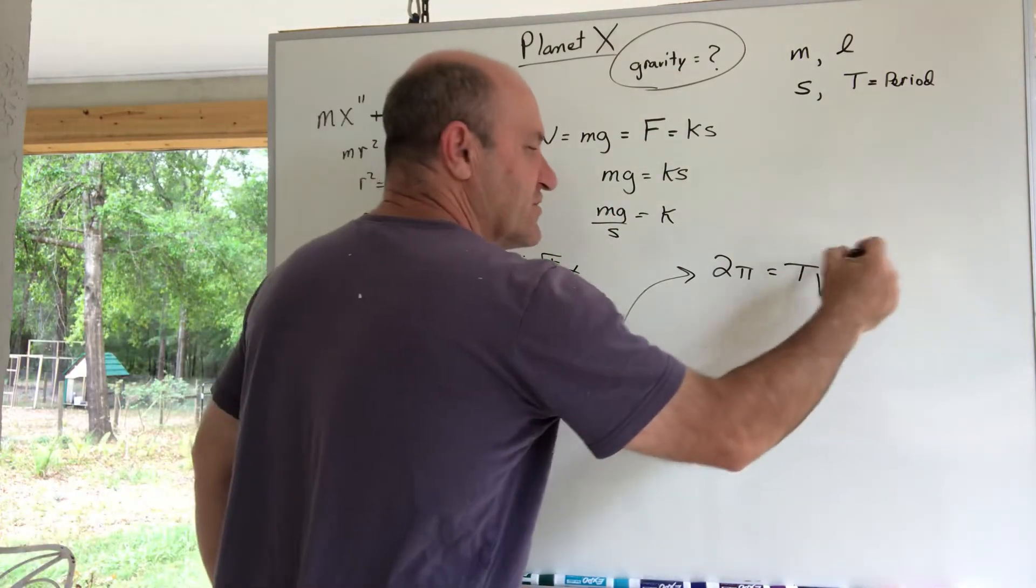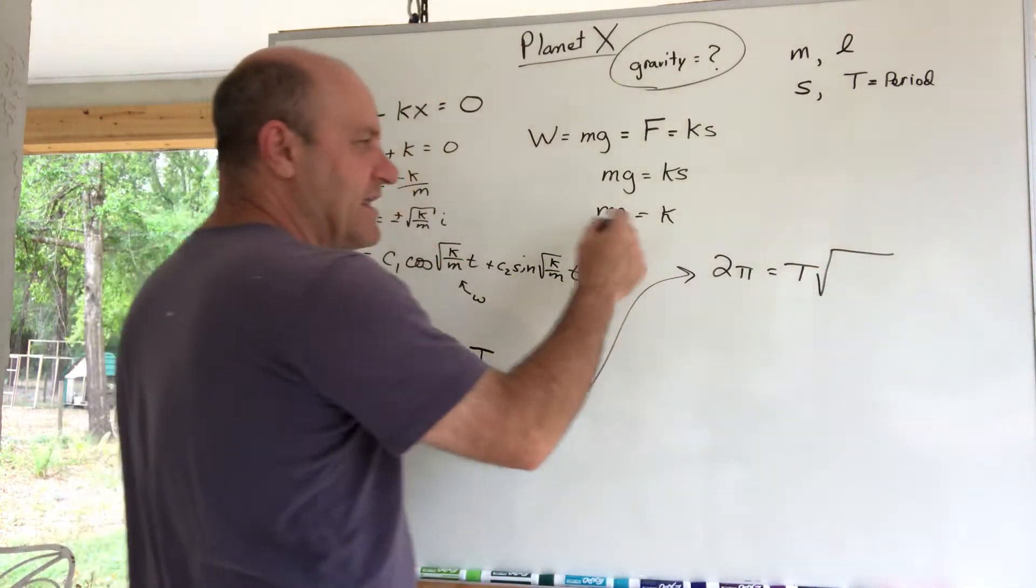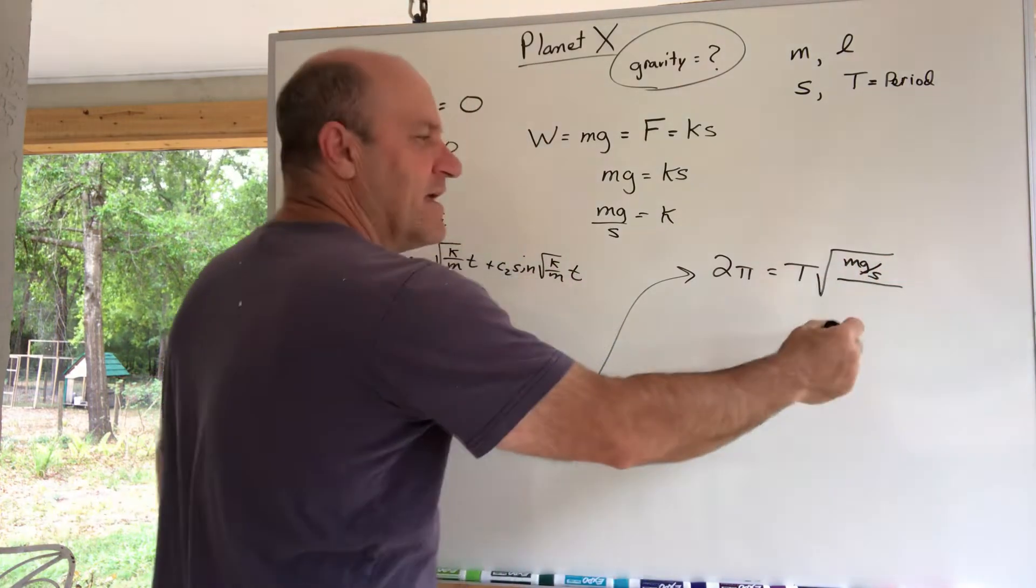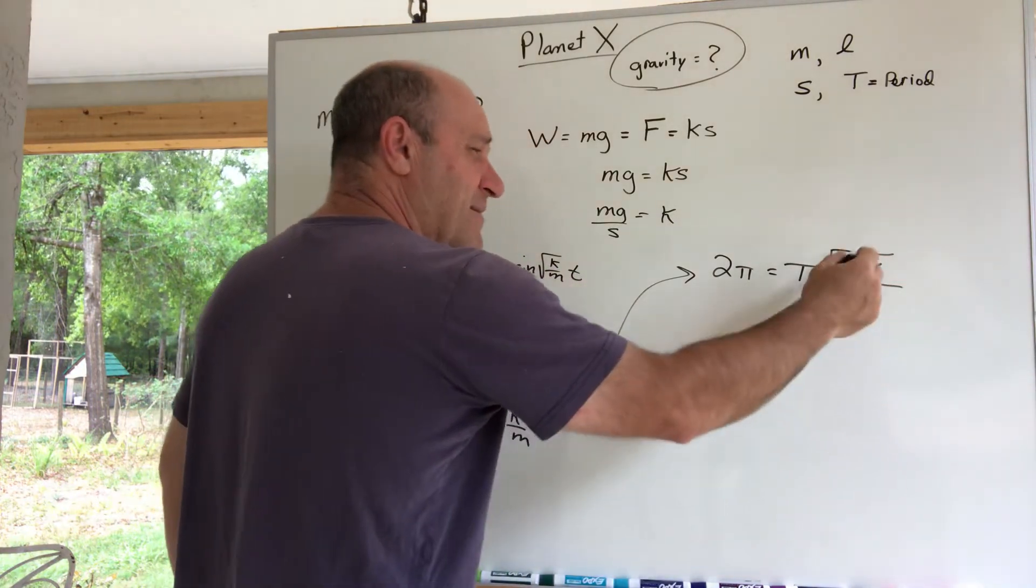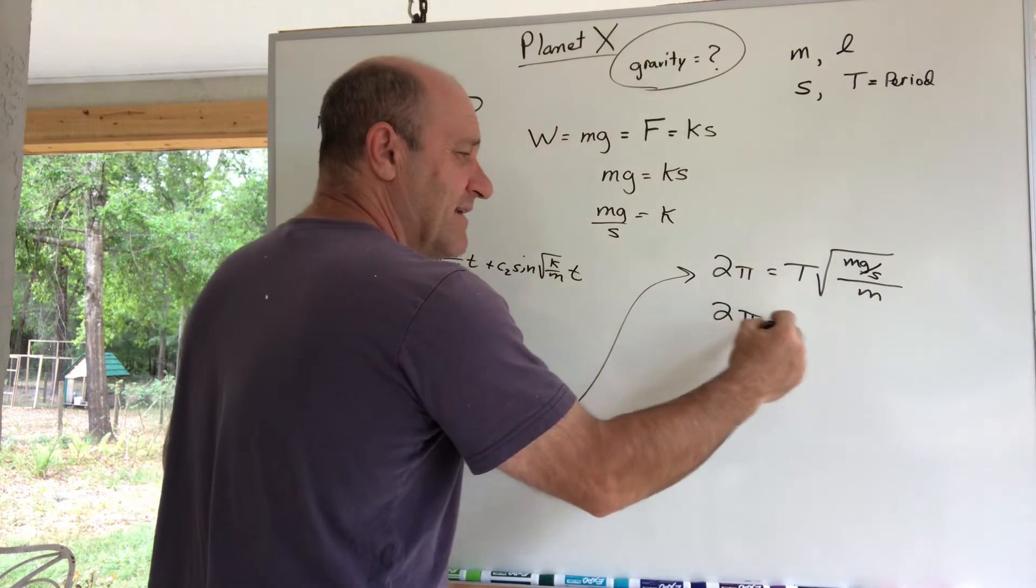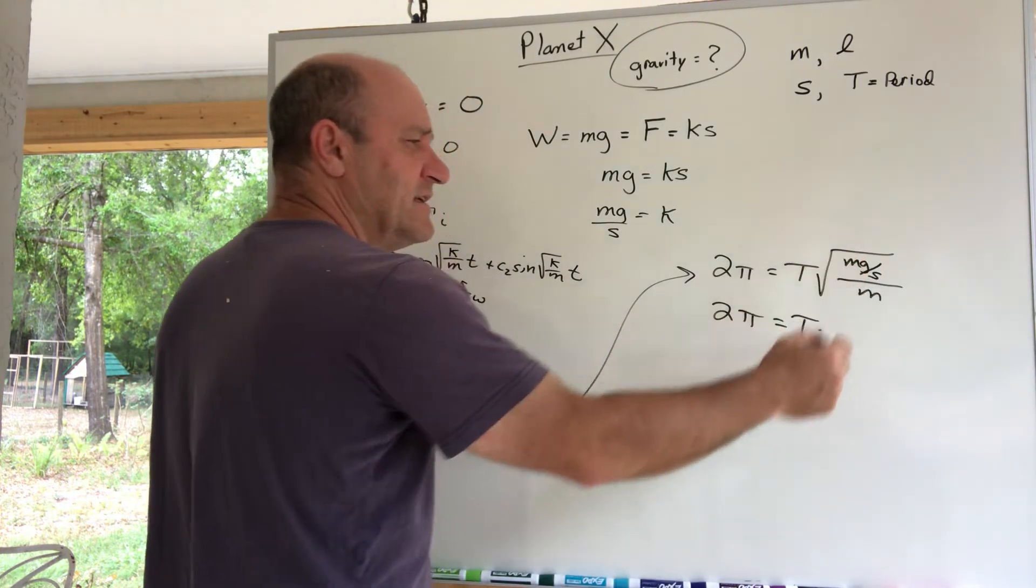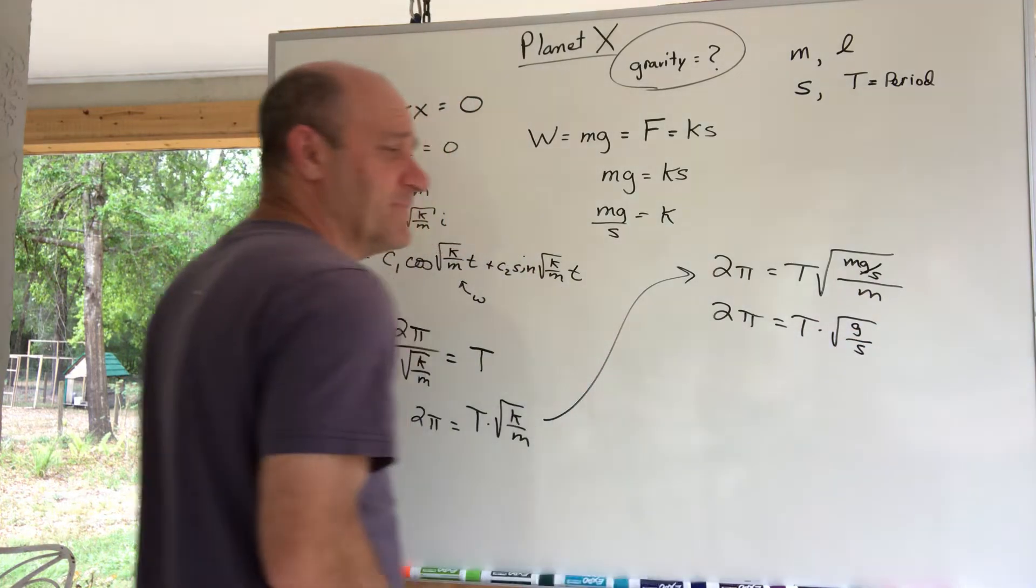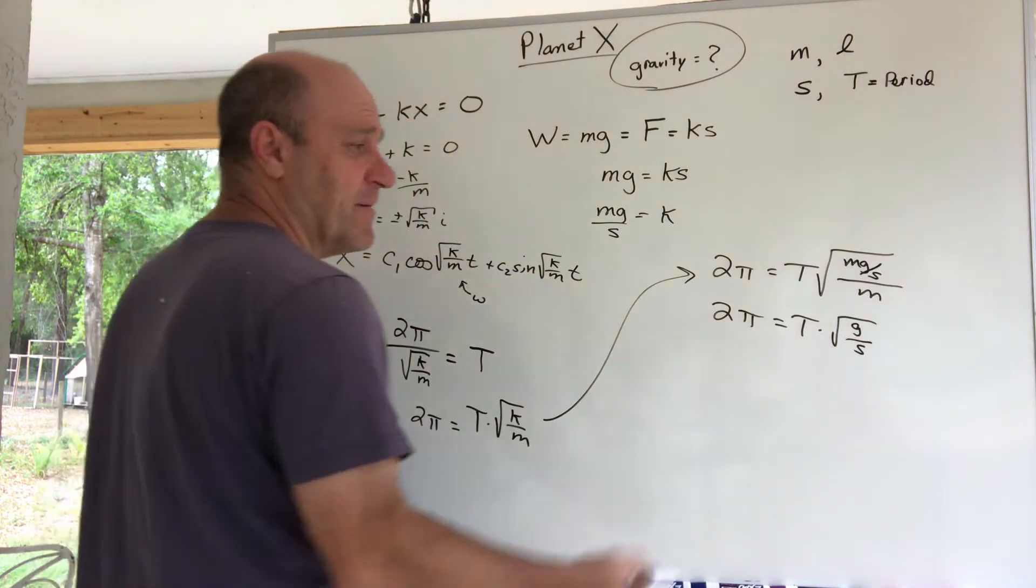So if I take this equation here, I'm gonna move over here. That's 2π = the period T times K/m, but I'm gonna say K is the √(K/m). I'm gonna say K is this mg/S. There's my K divided by m.